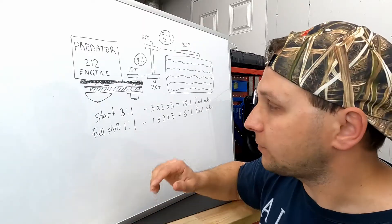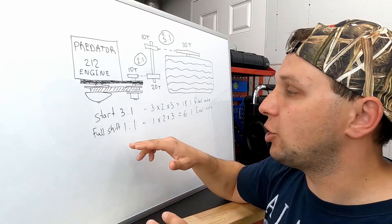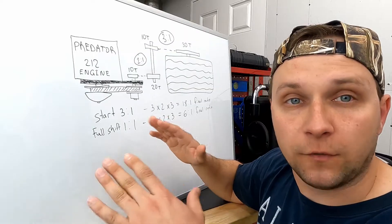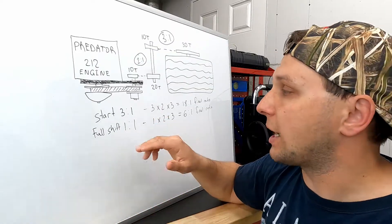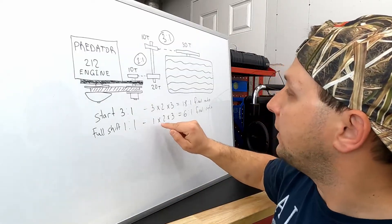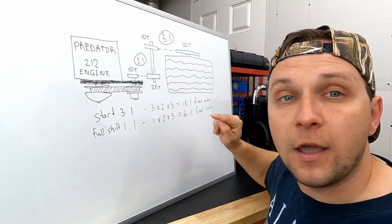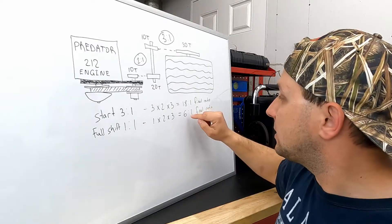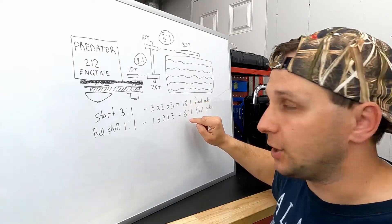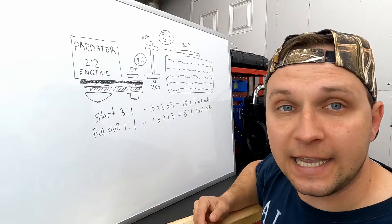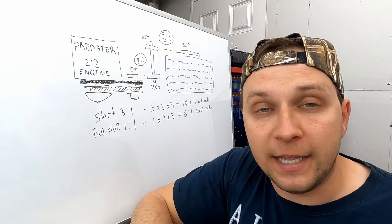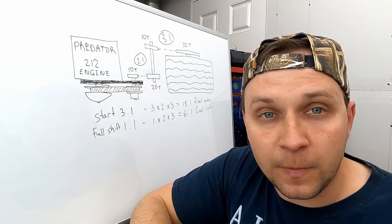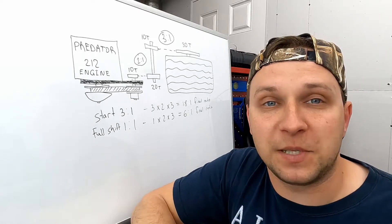Now let's count the gear ratio when the torque converter is fully shifted and the gear ratio at that moment is approximately 1 to 1. So 1 times 2 times 3 equals 6 to 1 final ratio. And this is a significant difference in numbers here, 18 versus 6. That shows us the benefits of using a torque converter. It gives us a torquey start and still good top speed.